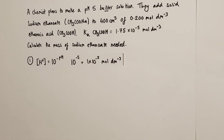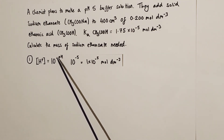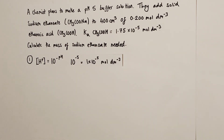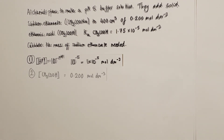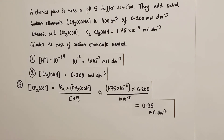Step one: work out the hydrogen ion concentration. H+ = 10⁻⁵ = 1 × 10⁻⁵ mol/L. The concentration of ethanoic acid is already given as 0.2 mol/L. Because the volume of the system is unchanged — solid salt is being added, so there's no dilution — there's no need to convert to moles and back. The concentration of ethanoic acid remains 0.2 mol/L.